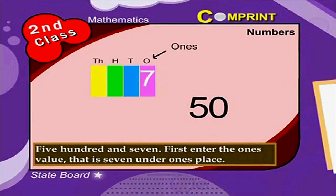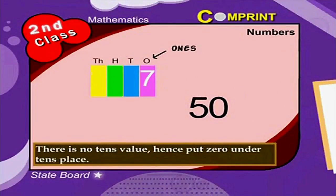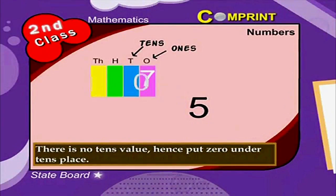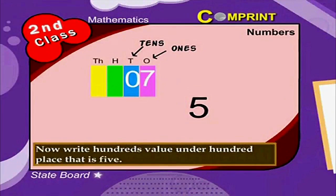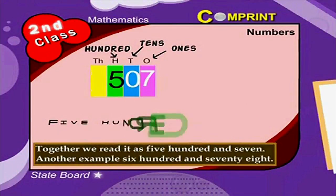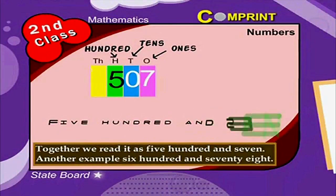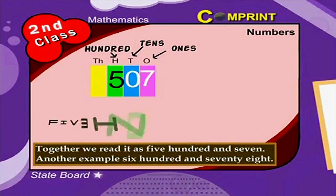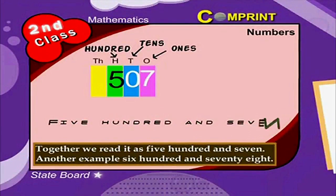First enter the ones value — that is seven — under ones place. There is no tens value, hence put zero under tens place. Now write the hundreds value under hundreds place — that is five. Together we read it as five hundred and seven.